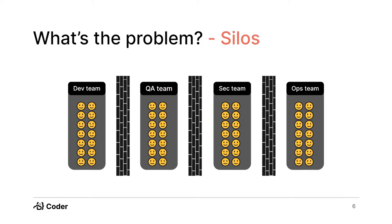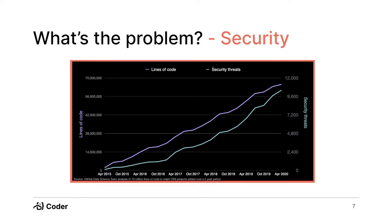Furthering this point, security is another major problem. GitHub's data science team came out with a report in mid-2020 showing that as lines of code have increased from April 2015 to April 2020, the number of security threats has increased at the same rate or faster. For every line of code written, there is a near one-to-one — sometimes one-to-two — relationship where a brand new security threat appears. These lines are converging, which means there might be more security threats coming out faster than we even write the code to fix them.